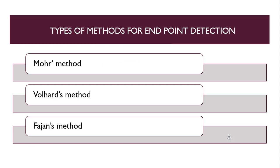Now, the types of methods for endpoint detection in precipitation titration are: Mohr's method, Volhard's method, and Fajan's method. These methods will be discussed in detail in the next upcoming video. Thank you dear learners for watching this video — we will discuss the methods for precipitation titration in the next video.